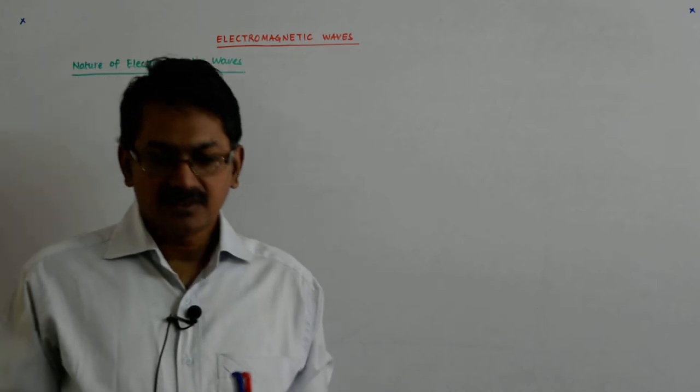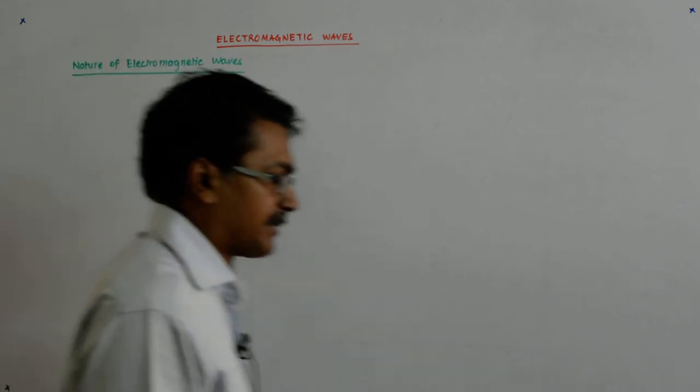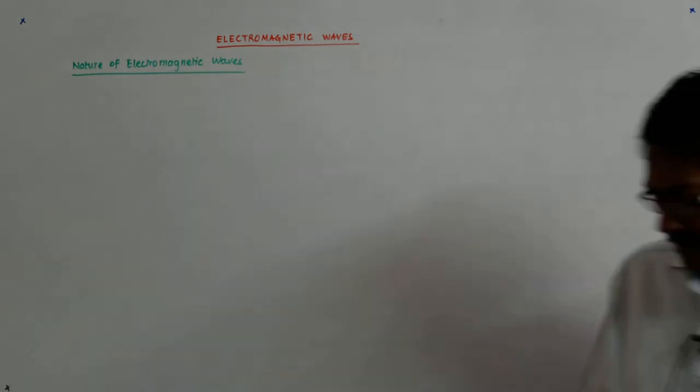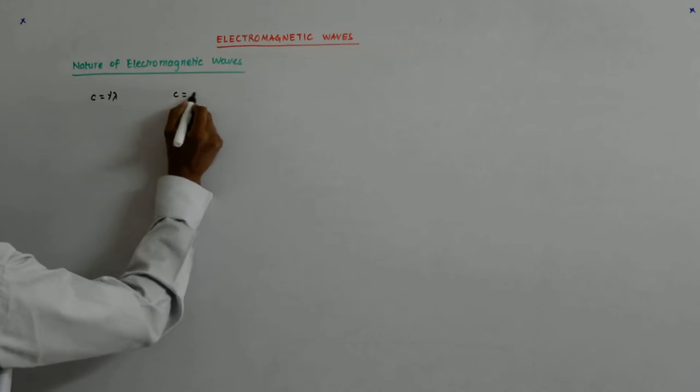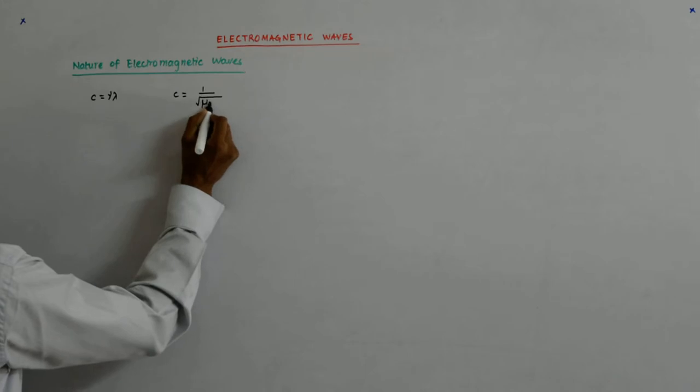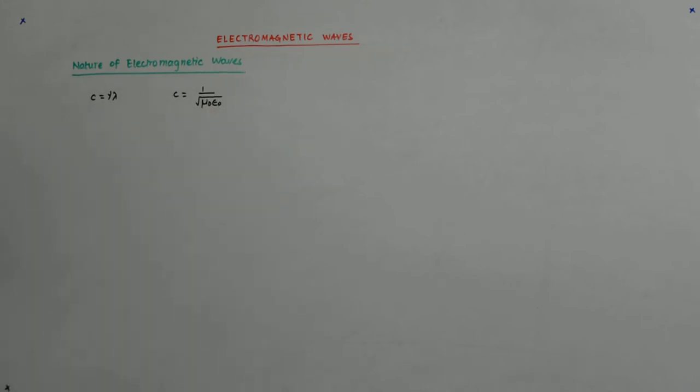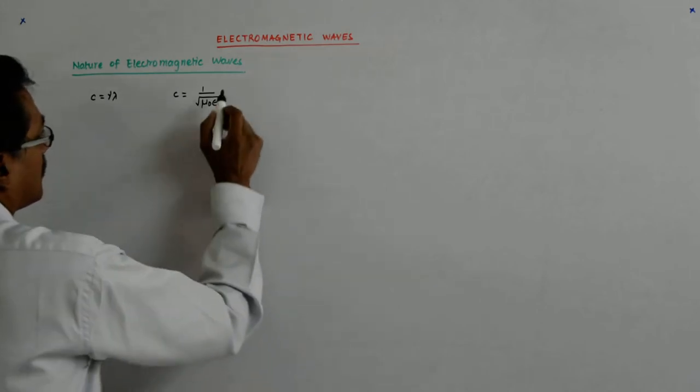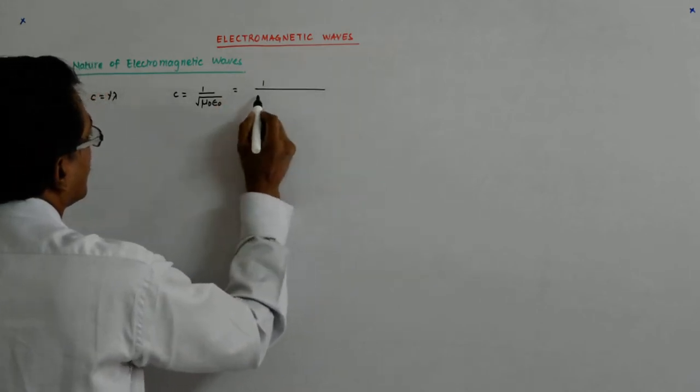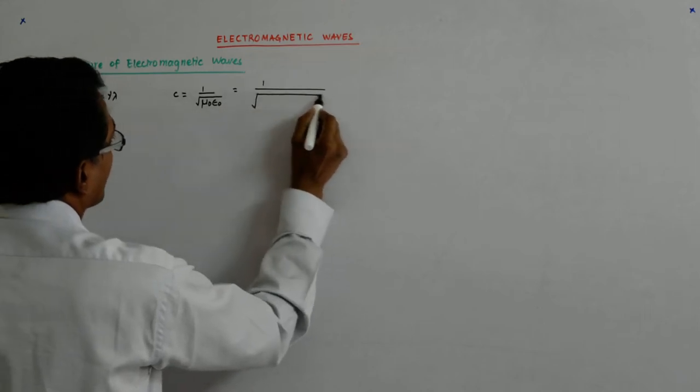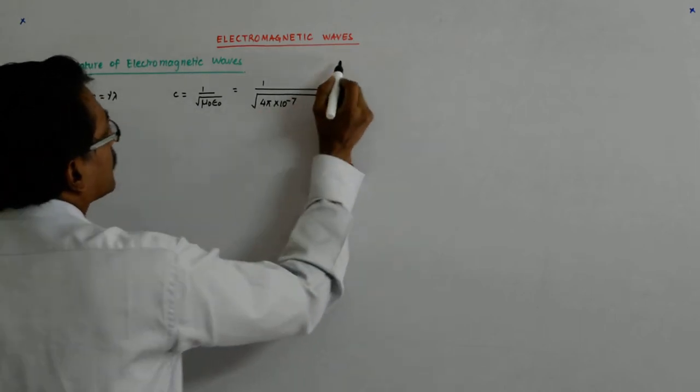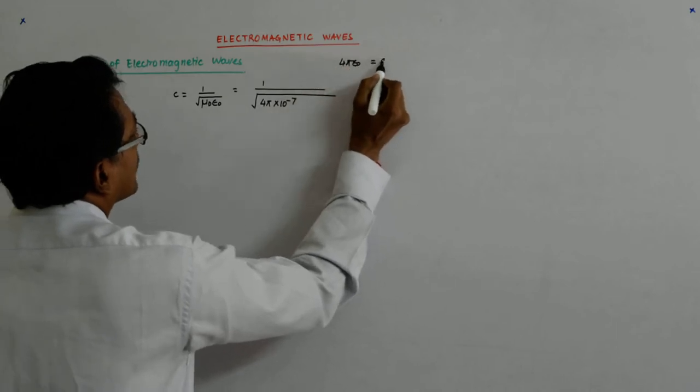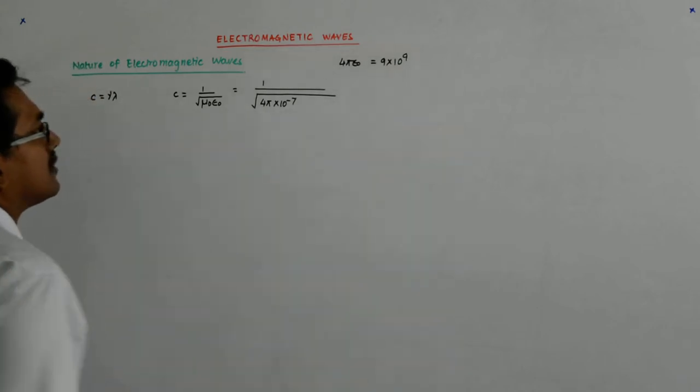So we saw that C is equal to mu lambda and we have also seen earlier that C is 1 upon root over mu naught epsilon naught. That is equal to mu is 4 pi into 10 to the power minus 7 and we know that 4 pi epsilon naught is equal to 9 into 10 to the power 9, correct.